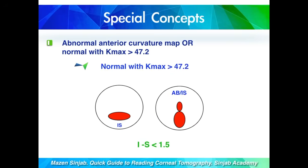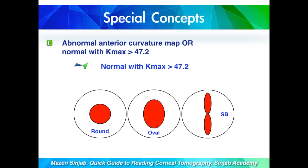The other point is when the curvature map is normal, but the Kmax is above 47.2 diopters — such as when there is inferior steep or asymmetric bowtie with a difference less than 1.5 diopters, or when there is a central or symmetric pattern but the Kmax is above 47.2 diopters.